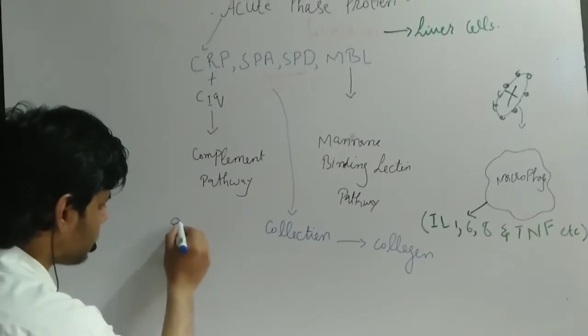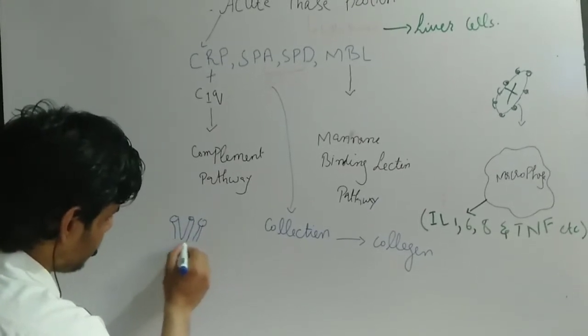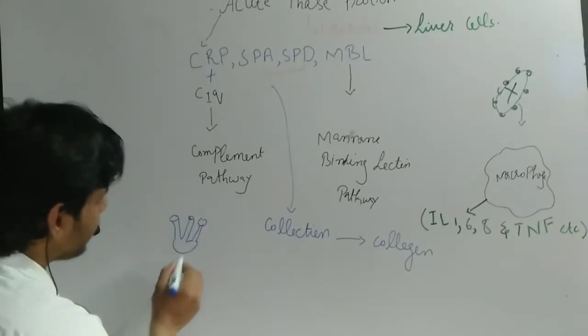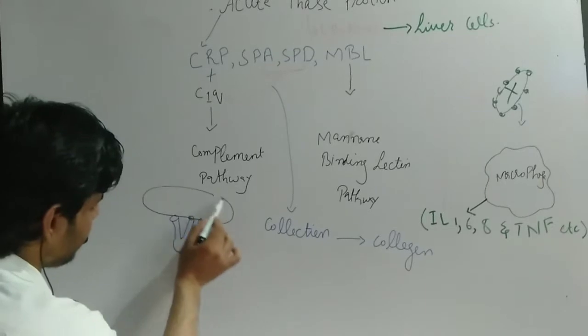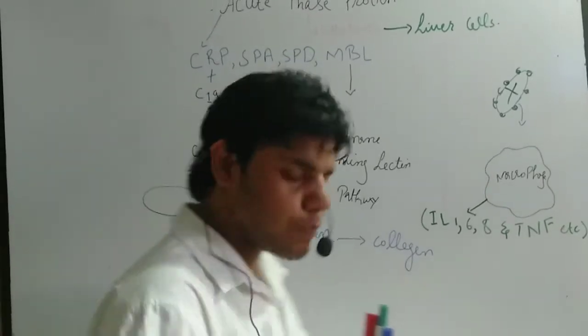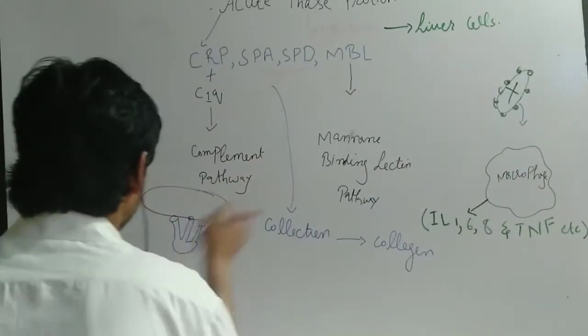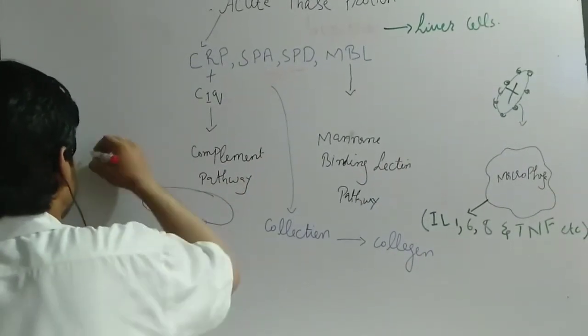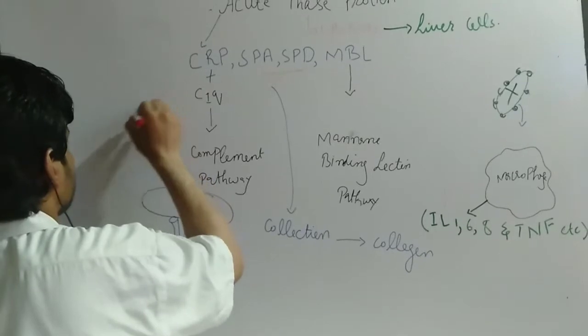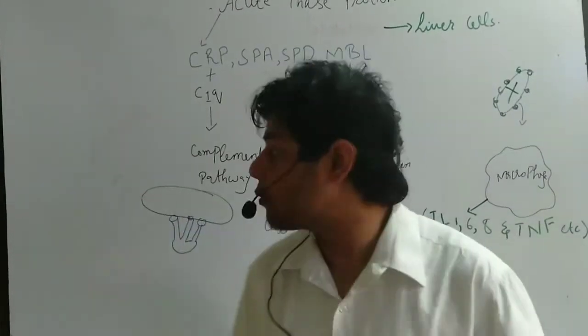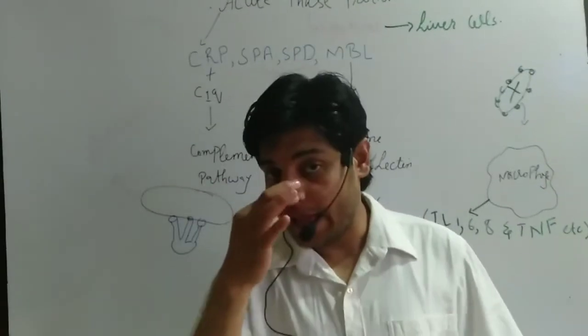These proteins will bind to the bacterial cell. Once these proteins bind to the bacterial cell, apoptosis phenomena happen to bacteria. They will activate the apoptosis process. Apoptosis is programmed cell death. Finally the cells die and the processes are under control.